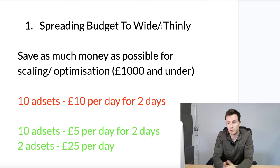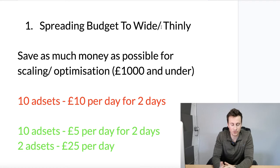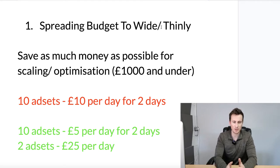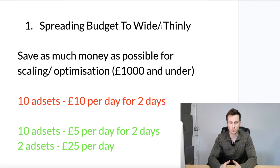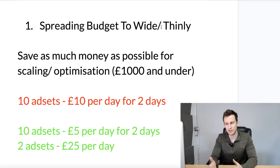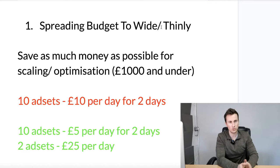Point number one is spreading the budget too wide, or too thinly. I see it all the time — people don't really have a strategy when they jump into Facebook ads. They'll test maybe five or six different audiences, give them all an equal budget, run them all for the same amount of time, and then expect to make money. For me, Facebook ads have never really worked like that.